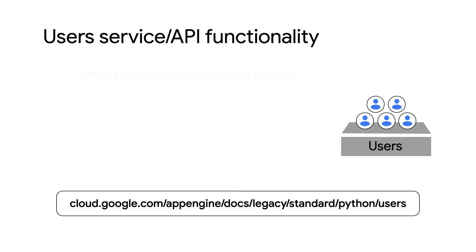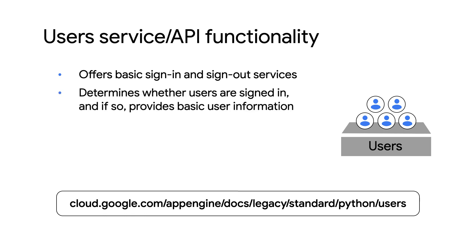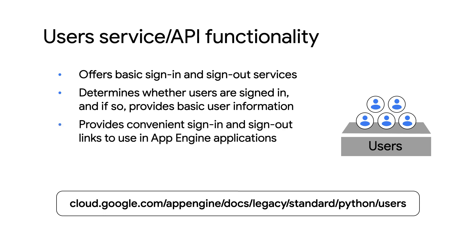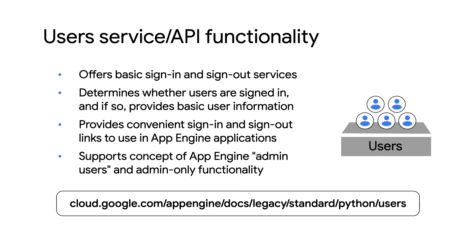Before we move ahead, earlier you said users was a lightweight Google sign-in service for App Engine. Does the user service do anything more than sign-in and sign-out? Good question, Martin. Aside from logging in and out, the user service helps your app determine whether a user has signed in, and if so, gives your app basic user information. It also provides convenient login and logout links for your app, as well as supporting the concept of admin users and admin-only functionality.